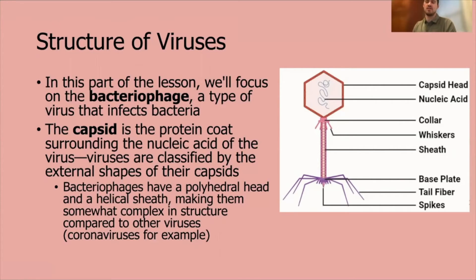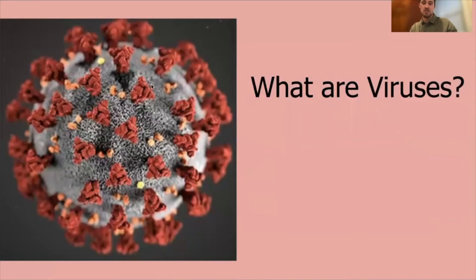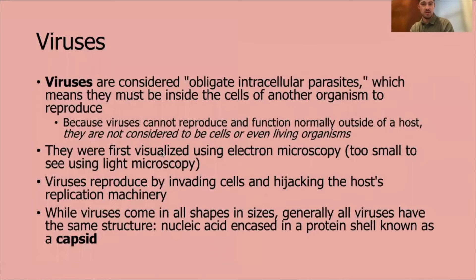Other viruses are simpler — usually just one shape. They could be entirely helical, like the sheath, or entirely polyhedral, like the capsid head of the bacteriophage. Compared to coronaviruses, for example, the coronavirus is much more simple in shape: just a round protein capsid with spike proteins. It's also encased in an envelope, which we'll talk about in a little bit.